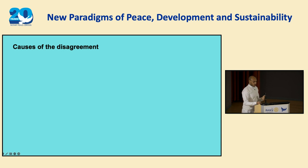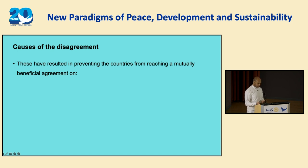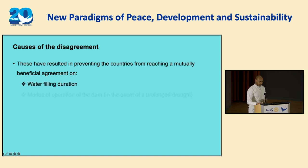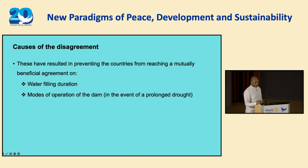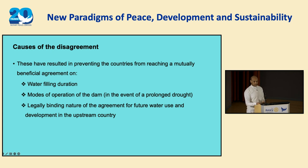These causes have prevented these three countries from reaching a mutually beneficial agreement on three major issues: one, the water-filling duration of the dam; two, the mode of operation of the dam, particularly in the event of prolonged drought; and three, the legally binding nature of the agreement, particularly in reference to future water use and development in the upstream country.